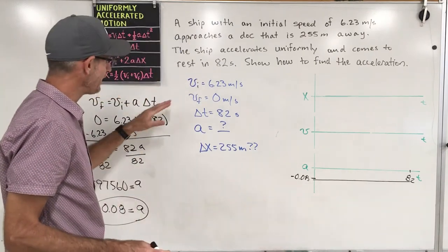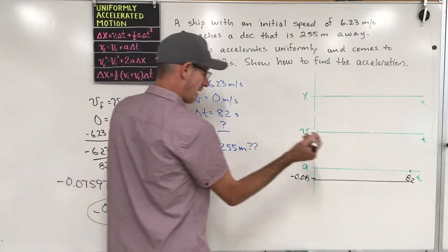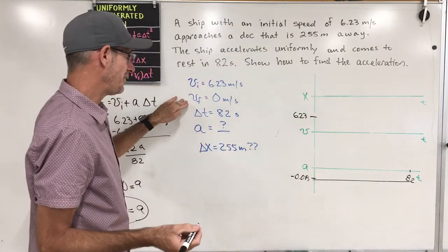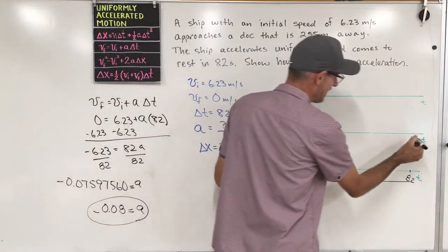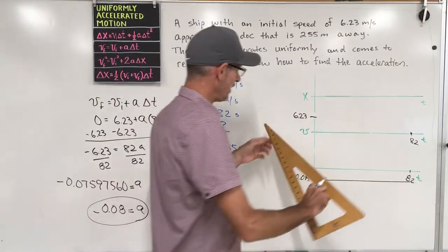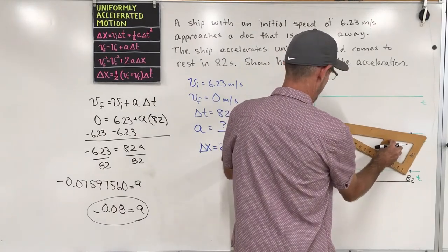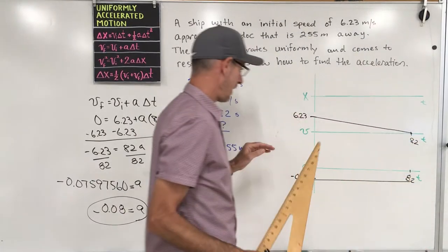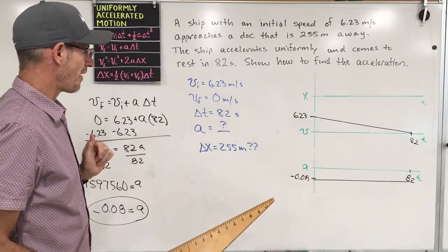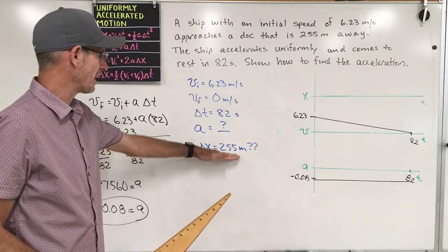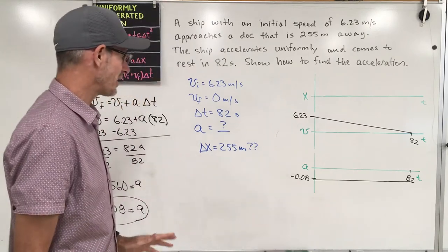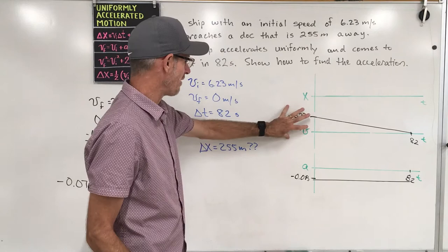Now for the velocity graph: our initial velocity is 6.23, and our final velocity is zero. So at the end of 82 seconds, the velocity reaches zero, giving us a straight line sloping downward. I'm going to hold off on the position graph for a moment and work our way backwards to see how everything connects.